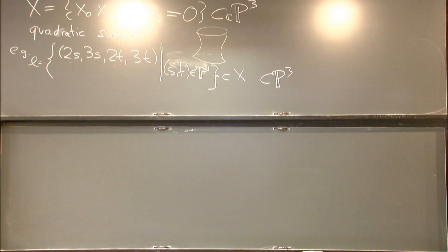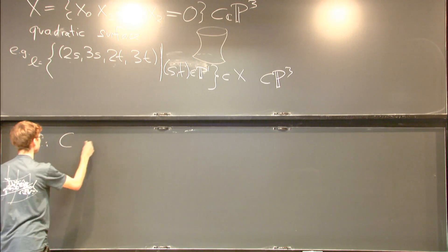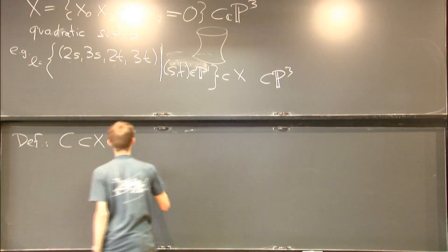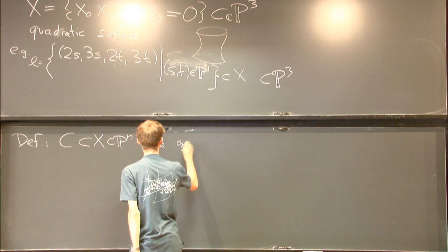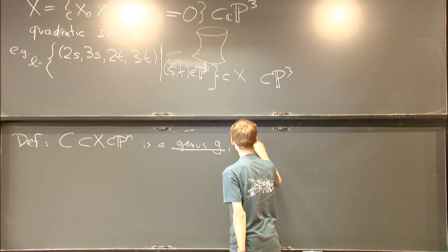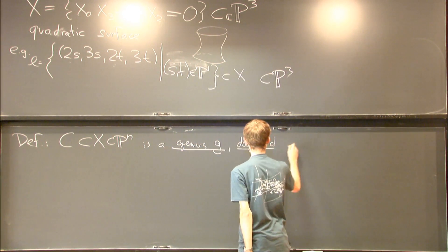Maybe to make this more precise, let me give you a definition. We say that C inside some X in projective space is a - I'm going to define what it means to be a genus g, degree d curve.